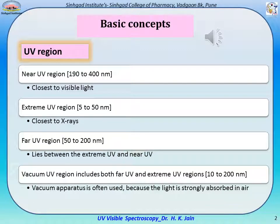Ultraviolet (UV) spectroscopy and visual spectroscopy are the most widely used techniques for pharmaceutical analysis. The wavelength of the UV region is smaller than that of the visible region. The UV region is classified into Near-UV, Extreme-UV, and Far-UV. The Near-UV region is closest to visible light, Extreme-UV is closest to X-ray, and Far-UV lies between them. The Vacuum UV region includes both Far-UV and Extreme-UV, where vacuum apparatus is often required because light is strongly absorbed in air.